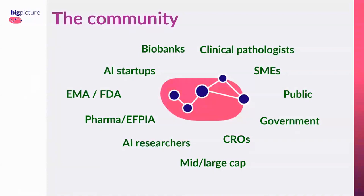Who is doing this? At a larger scale, we want to be very inclusive. The community we aim for is much broader than the 46-party consortium. It includes pathologists, SMEs, governmental organizations, regulatory agencies, researchers, pharma, and startup companies. The consortium itself consists of 46 partners.